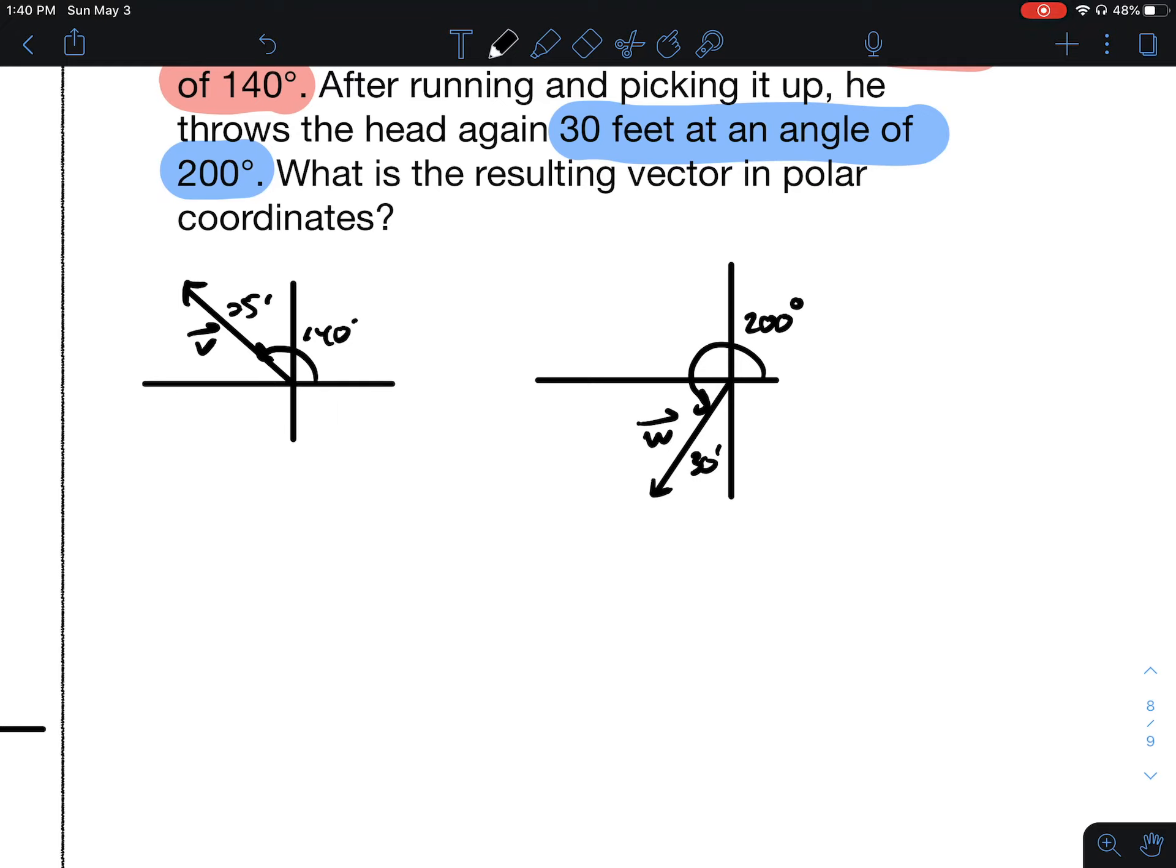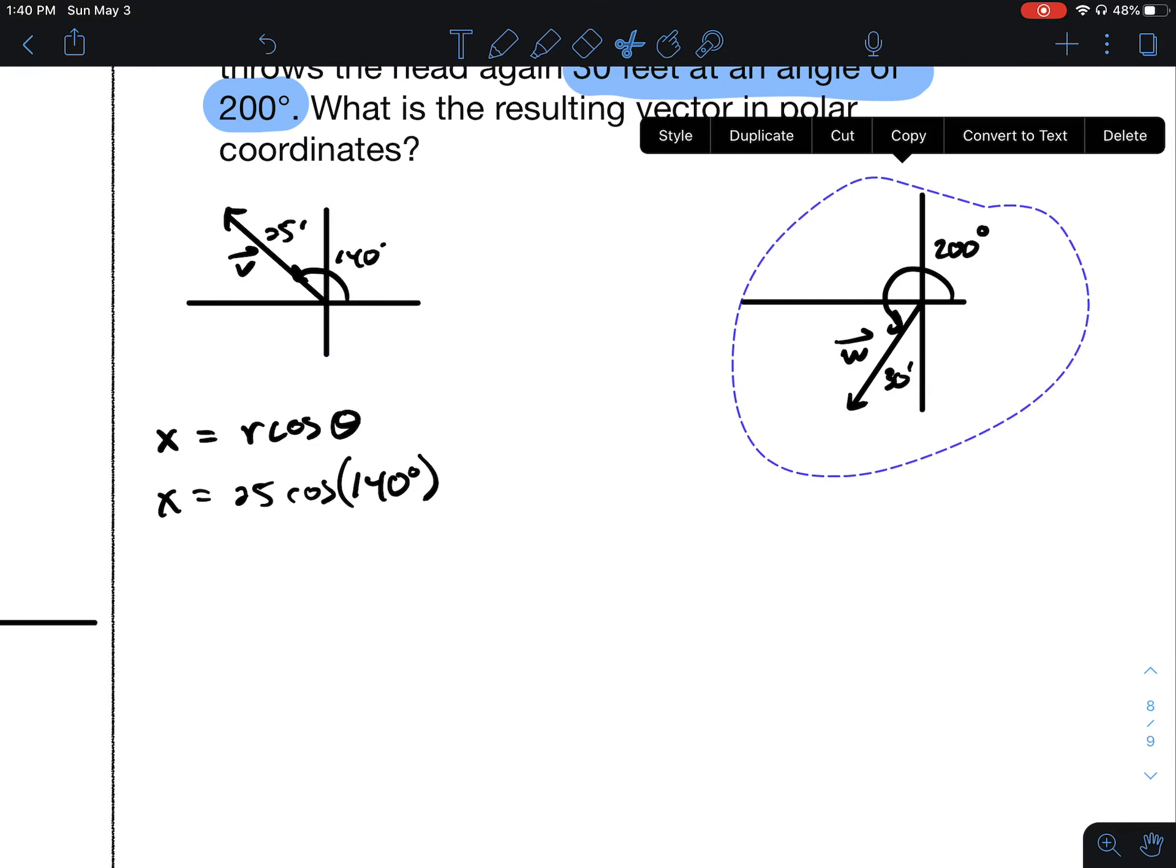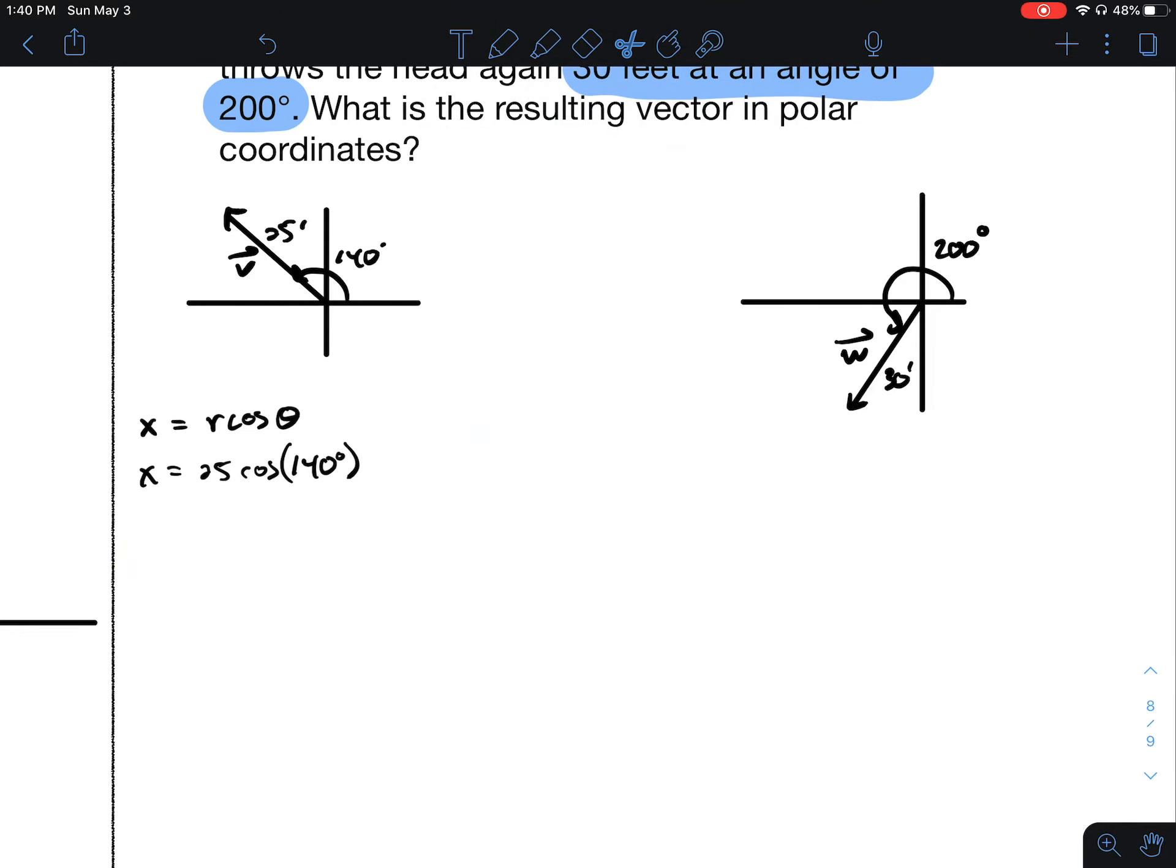These are not special right triangles, so we just use the formulas for the x and y components. For the x component, we would take R times cosine of theta, which would be 25 times cosine of 140 degrees. To find the y component, it would be y equals R times sine of theta.